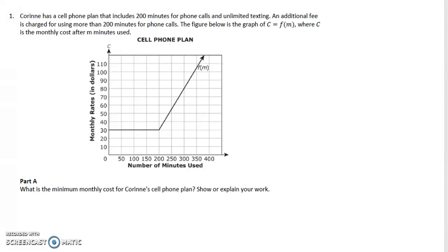Moving right along here, Corinne has a cell phone plan that includes 200 minutes for phone calls and unlimited texting. An additional fee is charged for using more than 200 minutes. The figure shows the graph C equals f(M), where C is the monthly cost after M minutes. What is the minimum monthly cost for her cell phone plan?